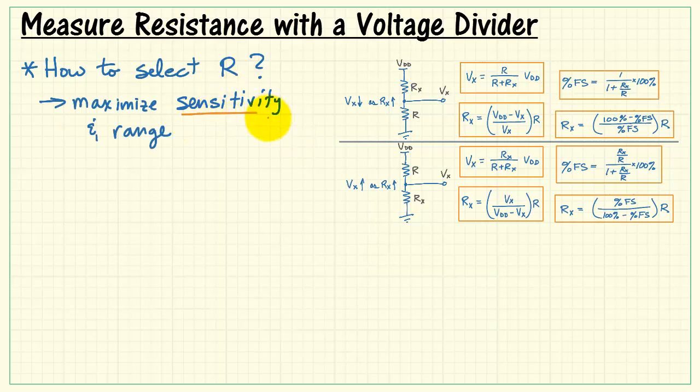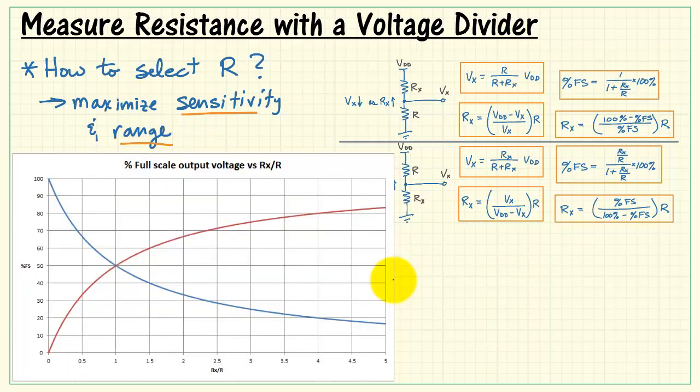Now let's turn our attention to maximizing the sensitivity and range of the measurement. This impacts our decision for the fixed resistor R. Here I'm plotting percent full-scale output as a function of our normalized resistance Rx. I have my two curves, one for Rx in the top branch and the other for Rx in the bottom branch.